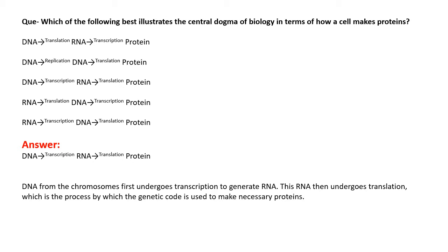The first question is: which of the following best illustrates the central dogma of biology in terms of how a cell makes protein? The options include DNA to RNA to protein, DNA to DNA to protein, RNA by translation to DNA then protein by transcription, and RNA to DNA to protein. The correct option is DNA to RNA to protein — by transcription, RNA is made from DNA, and by translation, protein is made from RNA.